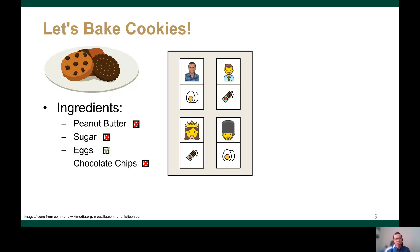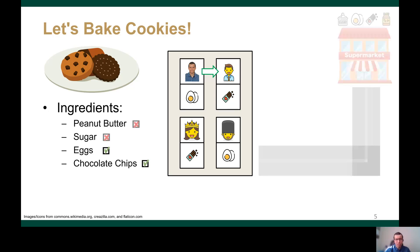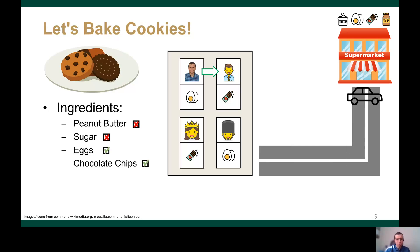Now let us consider another situation when I only had one ingredient, which is eggs. I checked with my neighbors and found that two of them had the chocolate and the other one has eggs. So I went to one of them to get the chocolate. However, I'm still missing two ingredients, so I ended up going to the supermarket to get these missing ingredients.